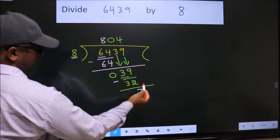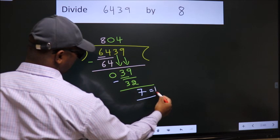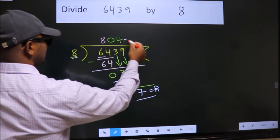No more numbers to bring it down. So, we stop here. This is our remainder. This is our quotient.